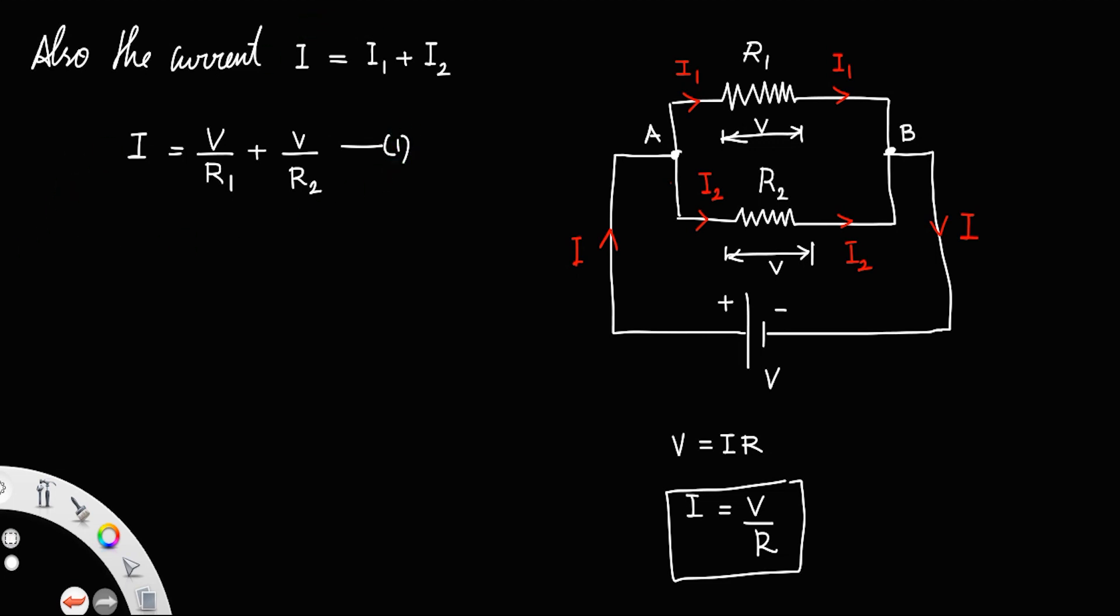Now, what I am going to do is I am taking the same cell again with the potential V, and between the points, let this be the point A, this be the point B, and I am connecting between the point A and B a resistance, let us say Rp.